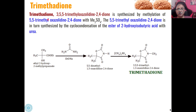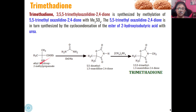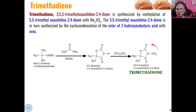Then is Trimethadione. Trimethadione is a 1,3-oxazolidine-2,4-dione derivative and is synthesized from 5,5-ethyl-2-hydroxy-2-methylpropionate. When this is condensed with urea in presence of a strong base like sodium ethoxide, a condensation reaction occurs and we get the 1,3-oxazolidine-2,4-dione. Then this undergoes N-methylation with dimethyl sulfate to give the 3,5,5-trimethyl-1,3-oxazolidine-2,4-dione derivative which is called Trimethadione.